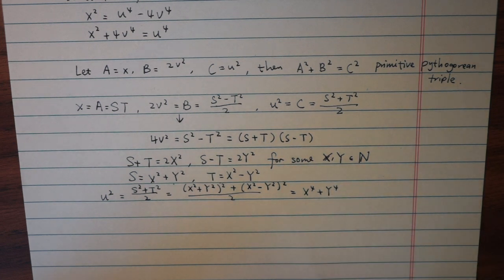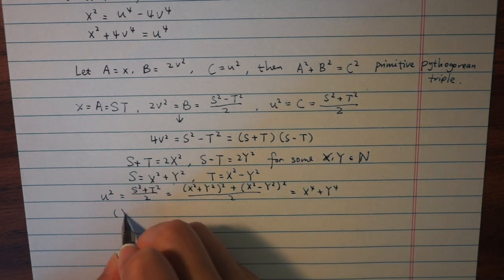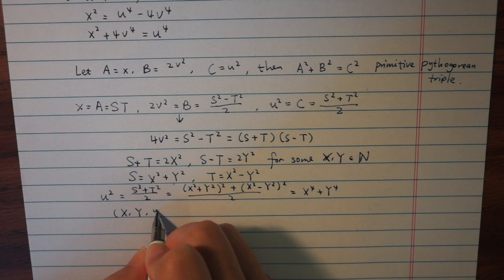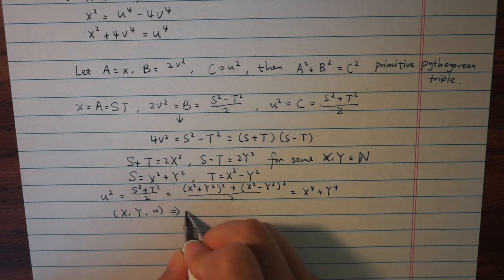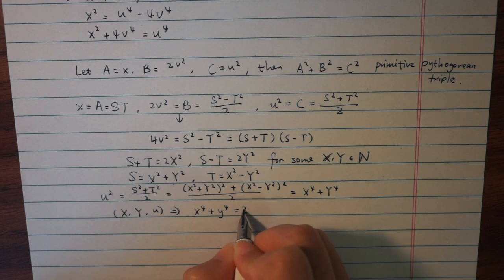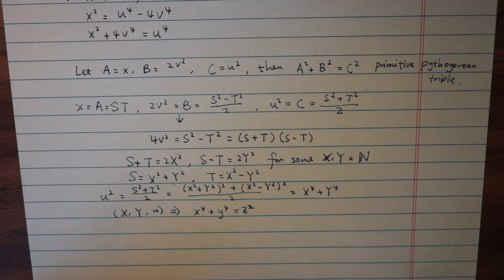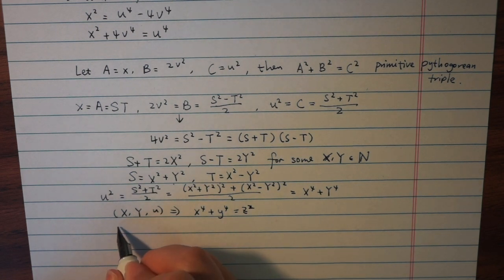So we have a new solution capitalized X, capitalized Y, and little u to our original equation x to the fourth plus y to the fourth equals z squared. It only remains to verify that the new solution is smaller than the original one.